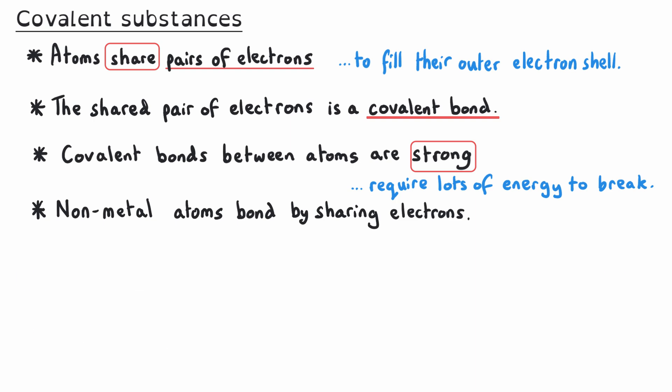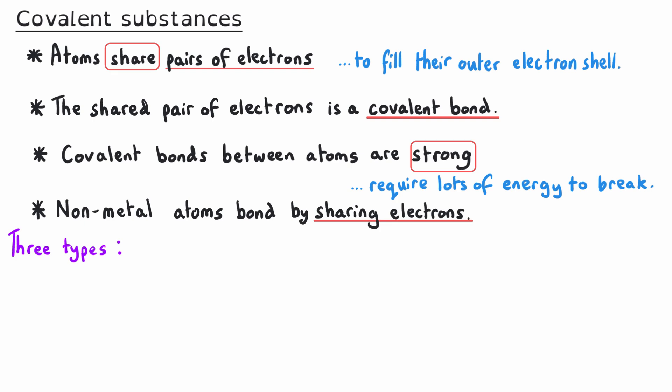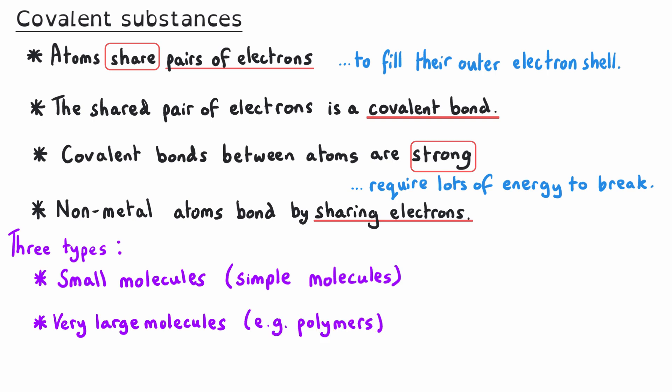This makes sense if you consider the fact that generally non-metals need to gain electrons to fill their outer shell, which is usually almost full. If two atoms both need to gain electrons, the only way they could do that is by sharing electrons, because they couldn't transfer electrons between one and the other and then both have a full outer shell. There are three different types of covalently bonded substances you need to know about: small molecules (sometimes called simple molecules), very large molecules such as polymers, and giant covalent structures.